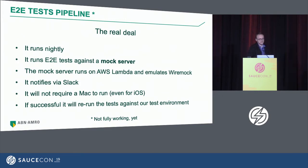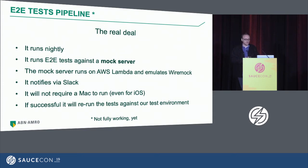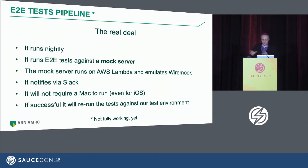Then we have the end-to-end test pipeline — the closest to reality system we have. It runs nightly because it takes a long time. It starts by running all our end-to-end tests against the mock server. Specifically, we use WireMock, which is an open source Java mock server. We run it locally, so a developer can develop using the mock server locally. Then we host it on a Lambda on AWS, because there are restrictions for devices in SauceLabs connecting to servers internal to the bank.